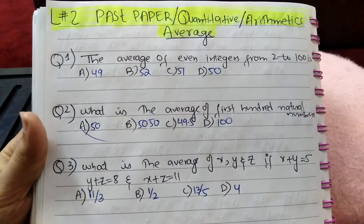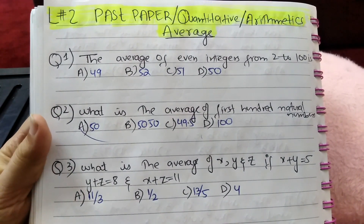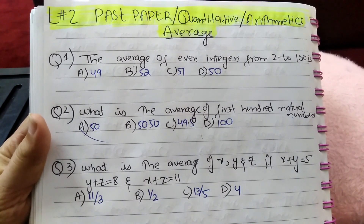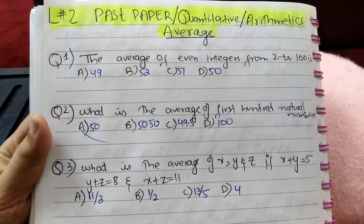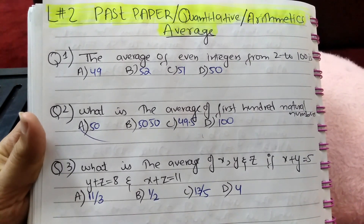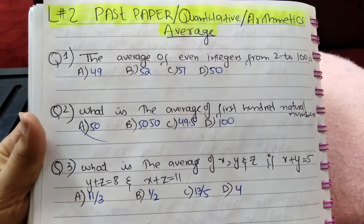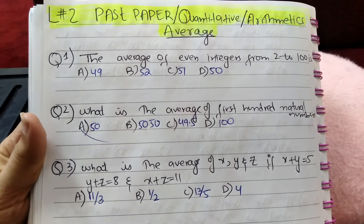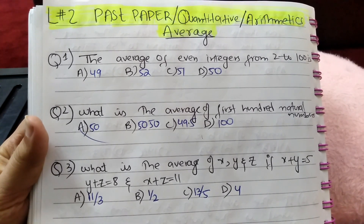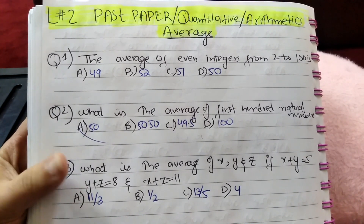Assalamu alaikum viewers, welcome to my channel NDS Guru. This is lecture two of the series of past paper MCQs from the quantitative portion. Today I will discuss all the questions related to averages. These questions repeat in different competitive exams in different ways. Question number one: the average of even integers from 2 to 100 is?